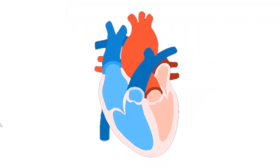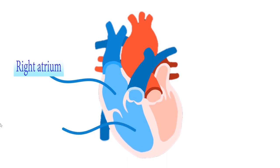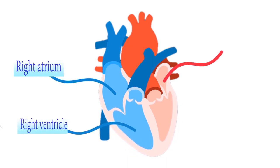Now, let me introduce to you the heart. The heart has four chambers, namely the right atrium, the right ventricle, the left atrium, and the left ventricle.